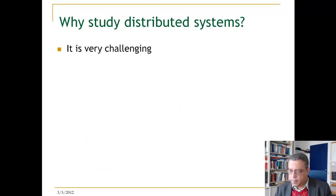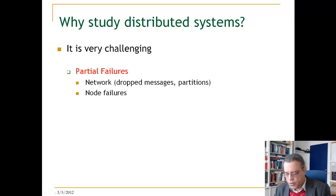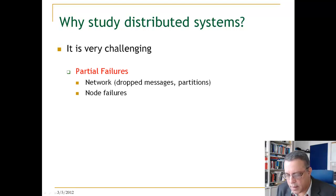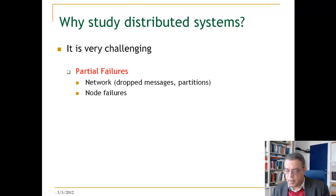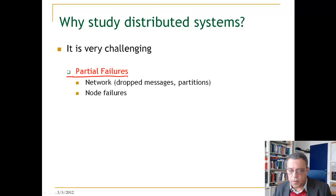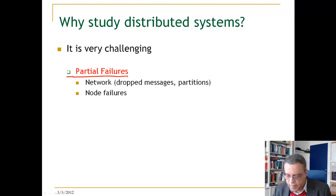Why do we study distributed systems? It's interesting and challenging. There are two important issues when you try to make a distributed system work. Distributed systems exhibit something we don't see in sequential centralized programs, which is partial failures. You have a set of nodes connected by a network, but the network can drop messages or it can partition — that is one possible failure. The other is that some of the nodes can crash, but still the system as a whole should be able to work.